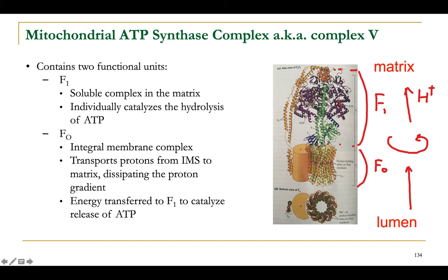The F1 subunit consists of several polypeptide chains referred to as alpha and beta subunits, shown here in deep purple. In three-dimensional form, these alpha-beta subunits form a ring-shaped structure consisting of three alpha-beta dimers forming an overall ring-shaped assembly.